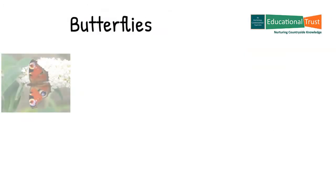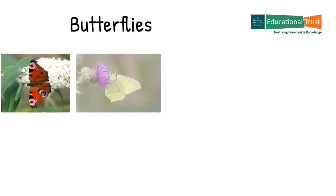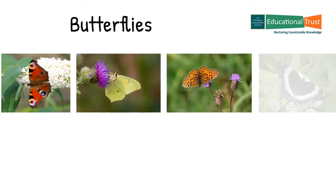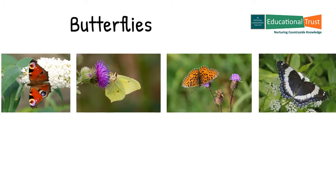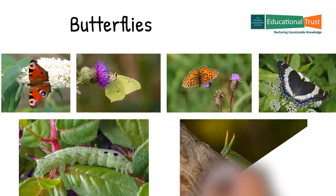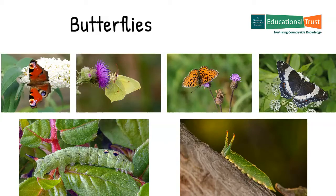Woodland butterflies provide a good indicator of the importance of light for overall biodiversity in woodland. Woodlands support more than three-quarters of all British butterfly species. Of these, two-thirds are currently under threat. Not only is this due to the overall loss of woodland habitats but also as a result of the decline in traditional woodland management techniques such as coppicing. The caterpillars of most woodland butterflies feed on the herbaceous plants and grasses growing on the woodland floor. Therefore, if there is no light then there is no field and grass layer and consequently no food or nectar for the caterpillars and adult butterflies.